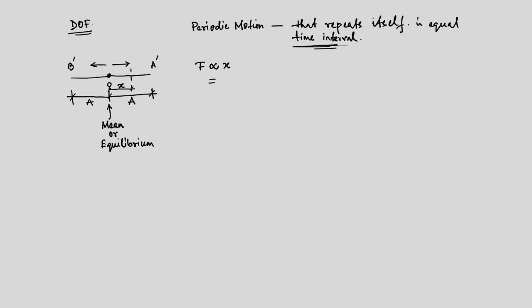There is a force proportional to the deformation: force f is equal to k times x, where k is a constant. If x equals 1 then f equals k, meaning k is the amount of force necessary for unit displacement. In structural engineering, we call k the stiffness. It acts as a restoring force to bring the structure back once it has experienced some vibration.